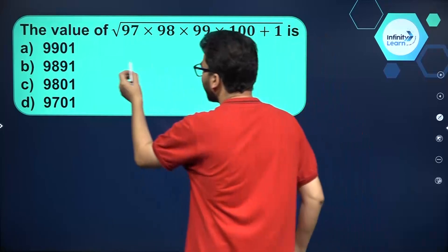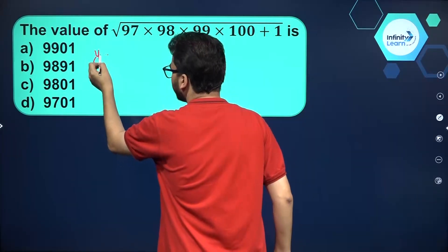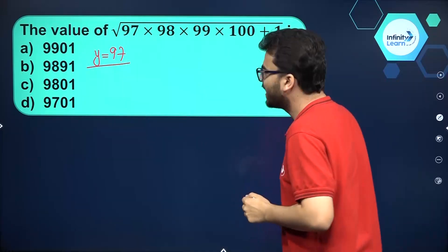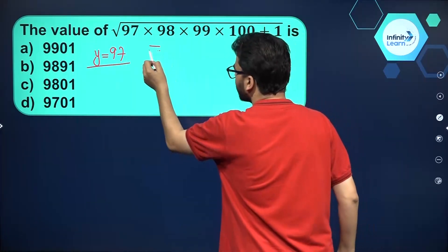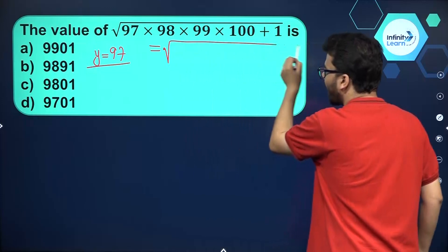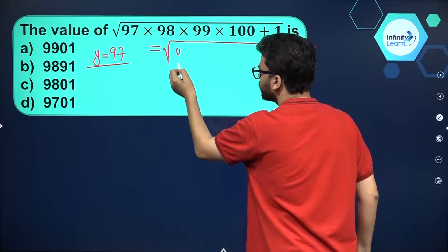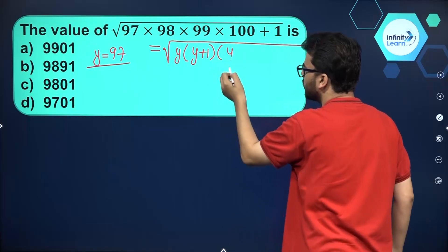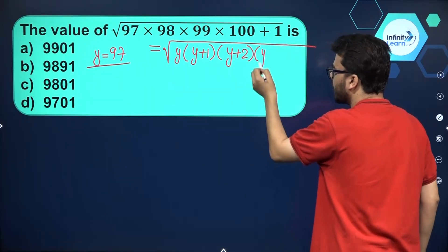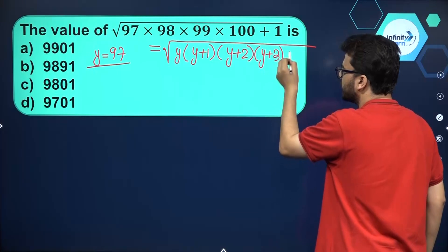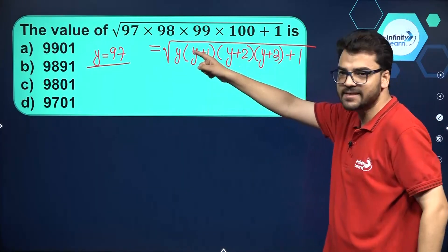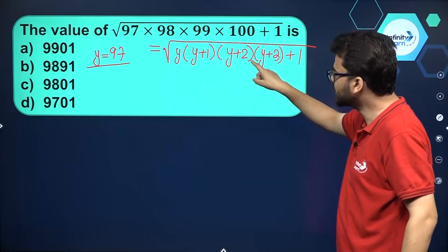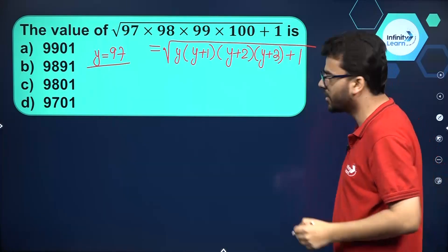Suppose we assume that y is equal to 97. Then the expression inside the square root can be written as √(y × (y+1) × (y+2) × (y+3) + 1). You see, if you take 97 to be y, then 98, 99, and 100 will be y+1, y+2, and y+3 respectively.